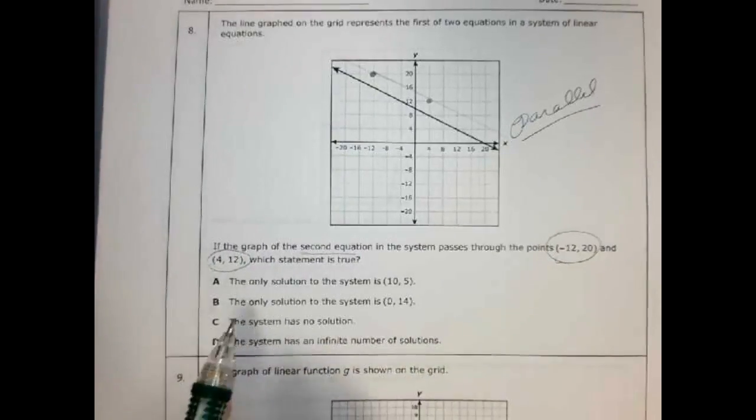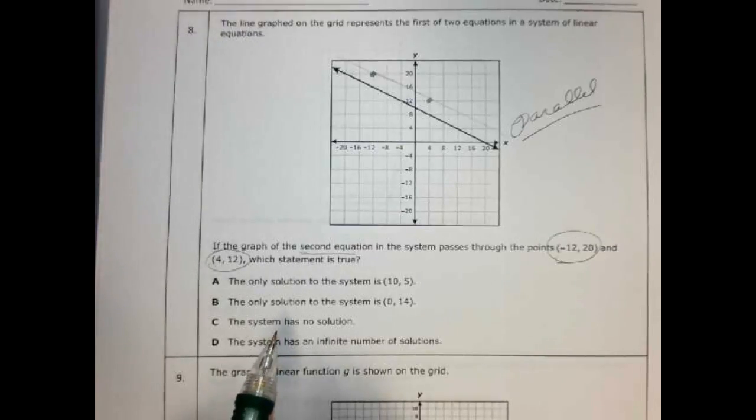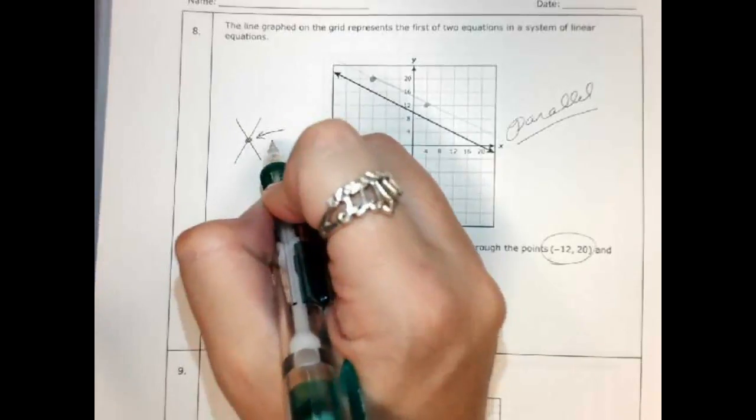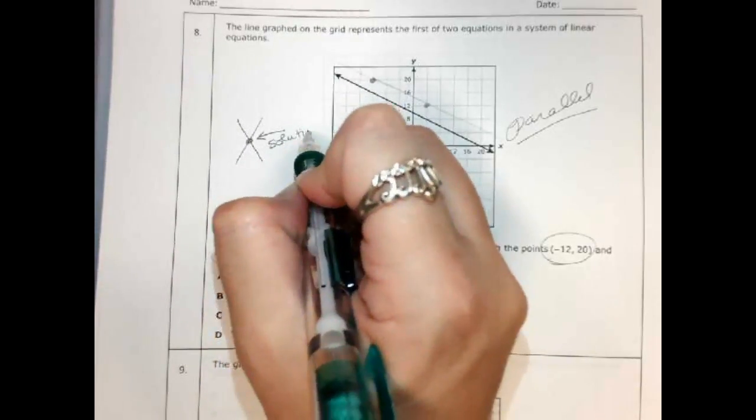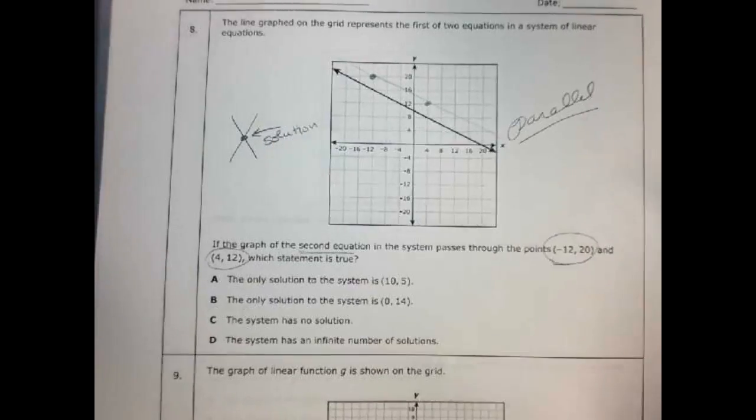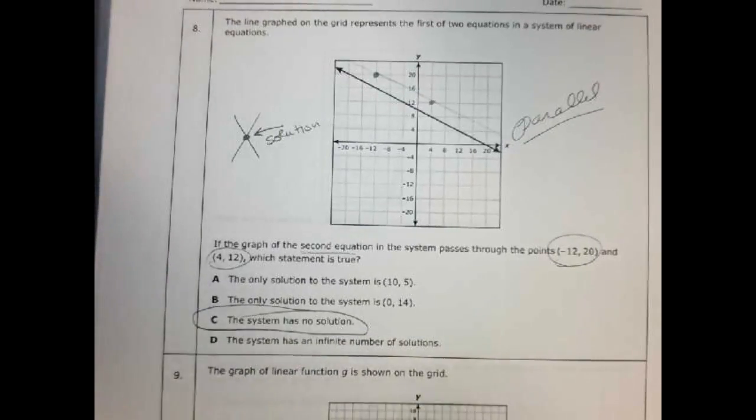And then it asks me, what is the solution? Well, the solution is where the two lines cross. If the two lines cross, this point right here would be the solution. But are these lines going to ever cross if they're parallel? They're never going to cross. So that means the answer is there is no solution because they don't cross.